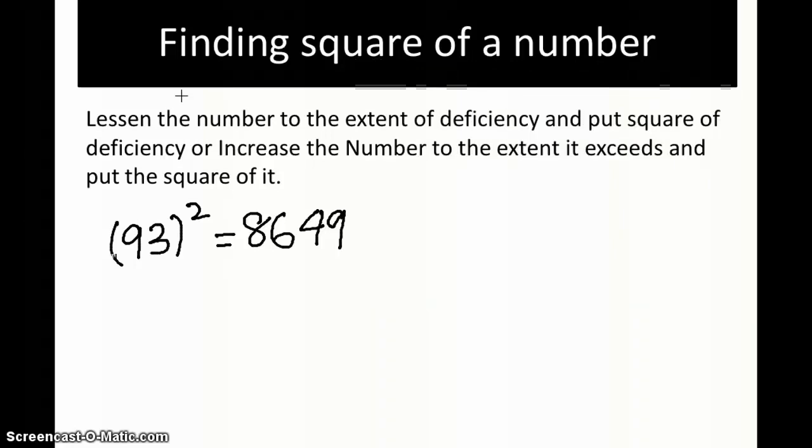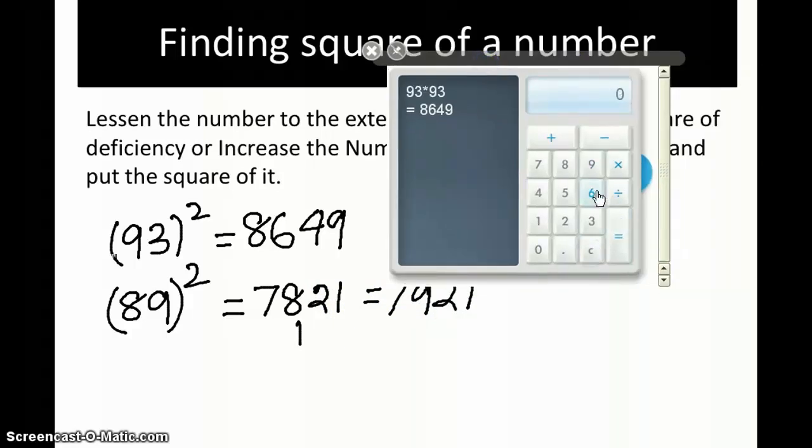Let's take one more example to check this out. For the case of 89 squared, lessen the number by the extent of deficiency. It is deficient by 11 from 100, so 89 minus 11 gives 78. Deficiency is 11, 11 squared is 121. We can only accommodate two numbers here, so we write 21 here and 1 here. The answer is 7921. Let's check the answer: 89 into 89 equals 7921.